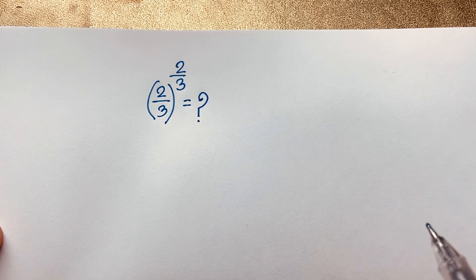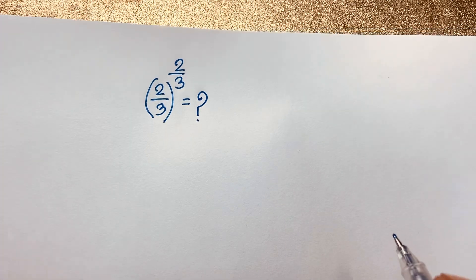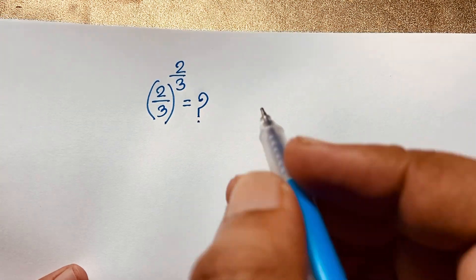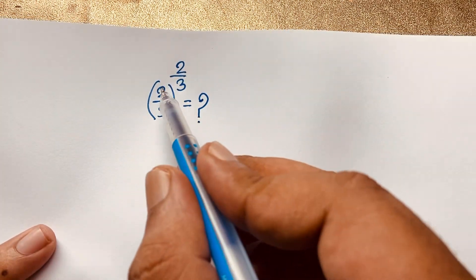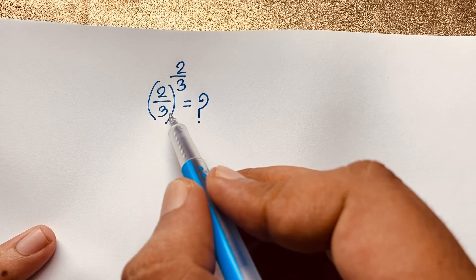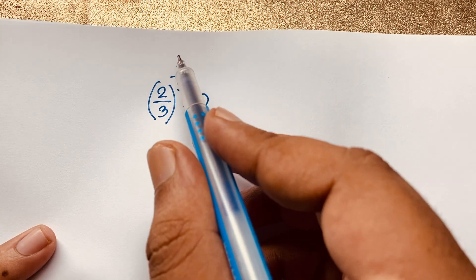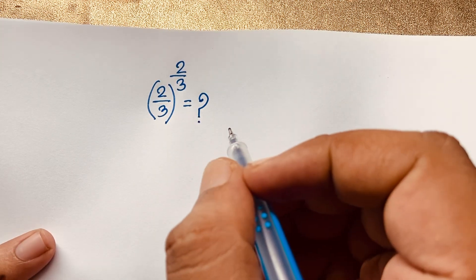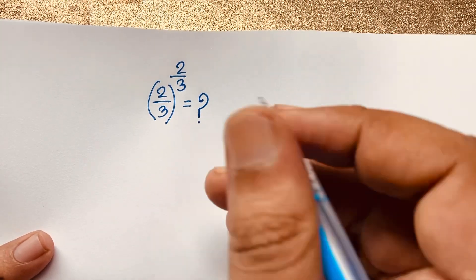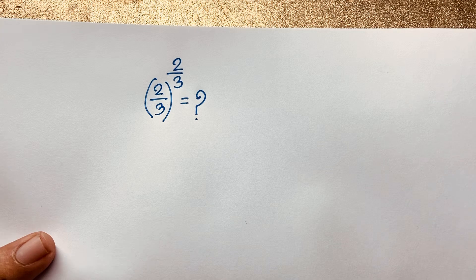Hello everyone, welcome to Rasha's Classroom. How to simplify 2 over 3, whole to the power 2 over 3? How to simplify this math problem?